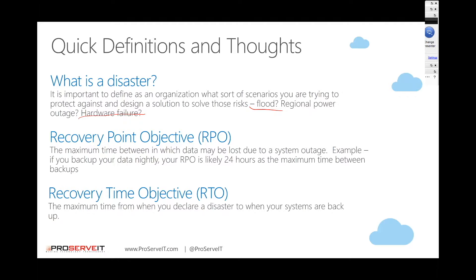These are two different things and they are important for different scenarios. From a Recovery Point Objective standpoint, a bank really values this above everything else — it's critical for them to balance the books and never lose a transaction. People's money means it may be okay if a site is down briefly, but they can never lose data, so their RPO will be near zero. Whereas Recovery Time Objective is really important to something like a hospital, where the system being up as quickly as possible matters most because people's lives are at risk, so they value RTO over anything else.